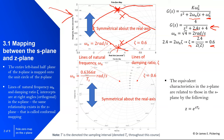The mapping between the S-plane and the Z-plane is that the left half of the S-plane maps into the unit circle of the Z-plane. The Z-plane relates to the S-plane by the equation z = e^(s·Ts), where s is the pole and Ts is the sample interval.